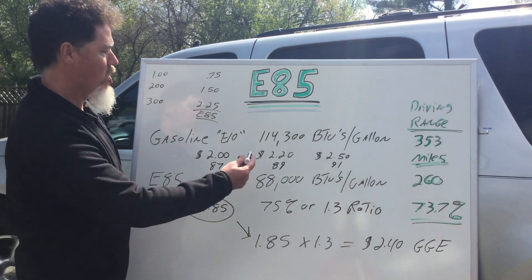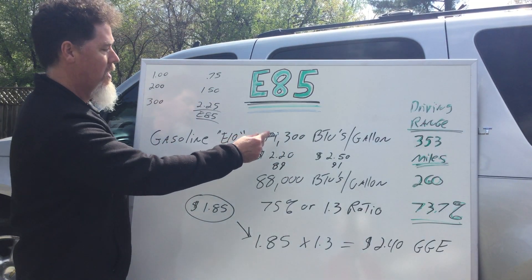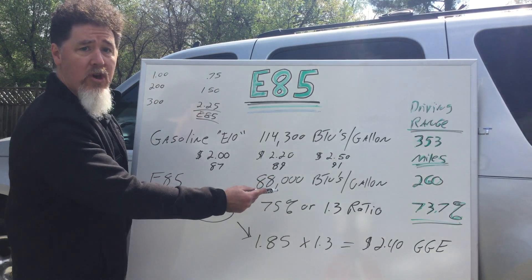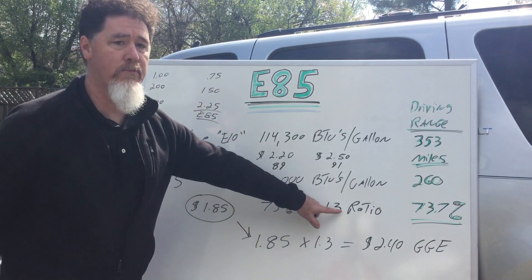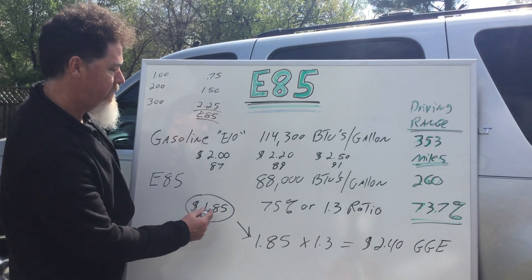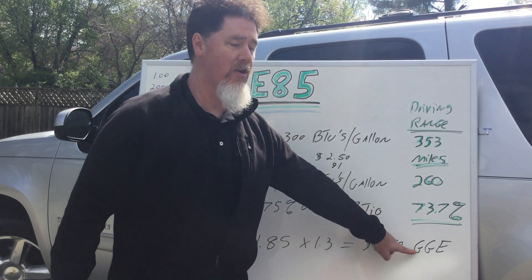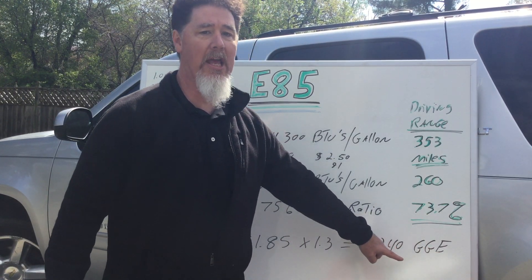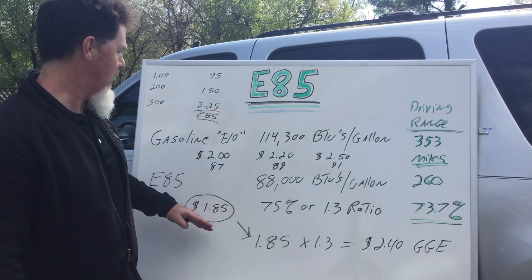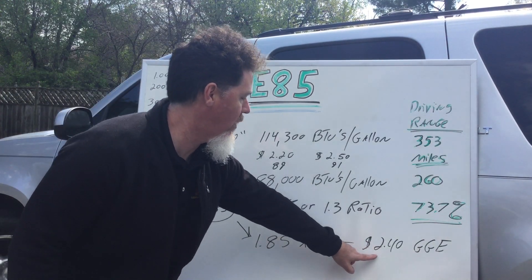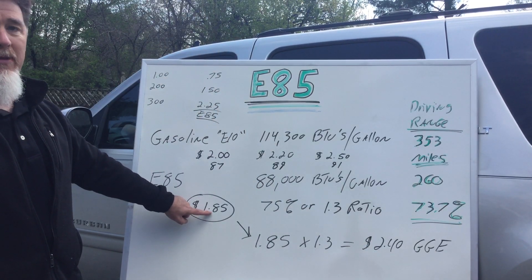A way to calculate this is: take your BTUs per gallon for gasoline (114,000) and divide by your E85 BTUs (88,000 BTUs), which gives you 75% or a ratio of 1.3. Take the price of E85 and multiply it by that ratio, and that gives you the gasoline gallon equivalent — calculating not just the price but the efficiency. Under this scenario, E85 is actually costing you $2.40 per gallon even though the pump says less, because it's less efficient.